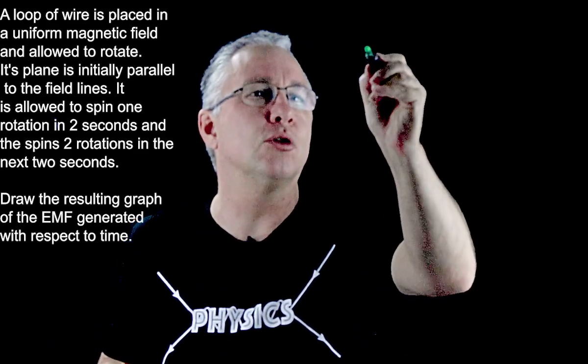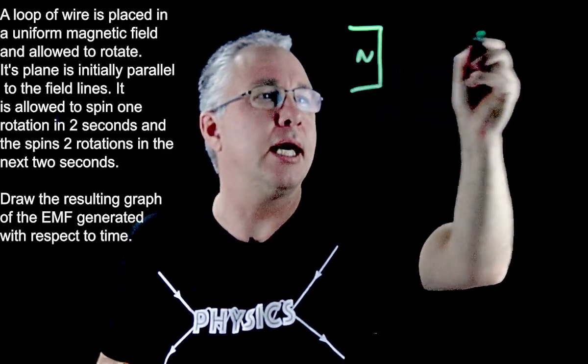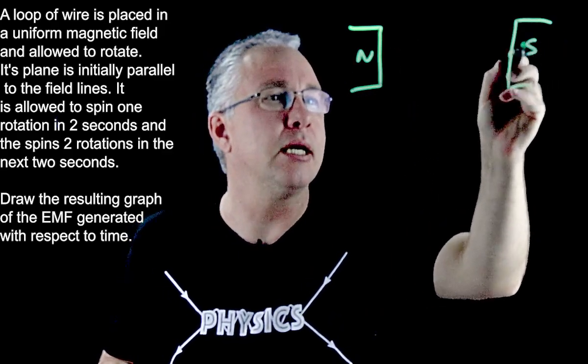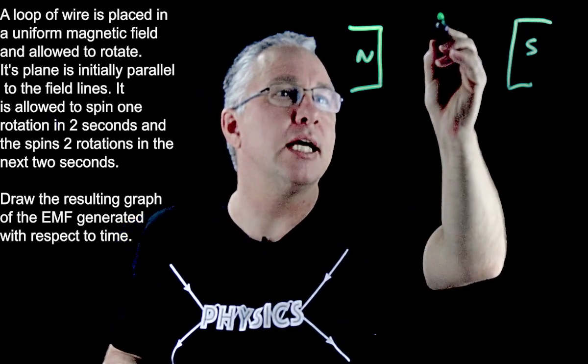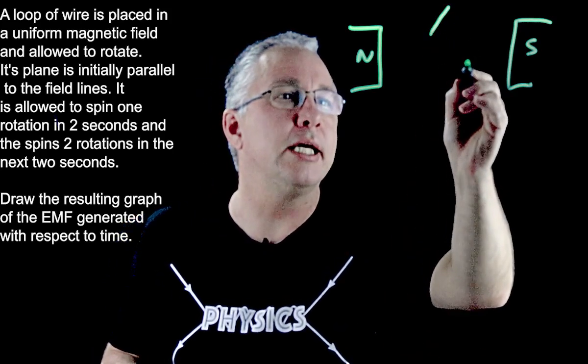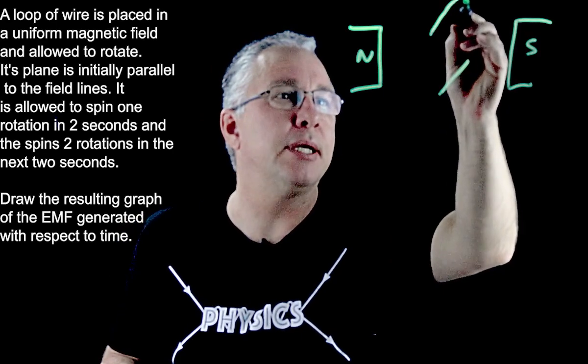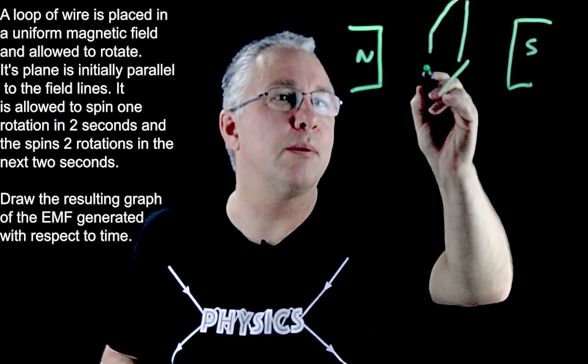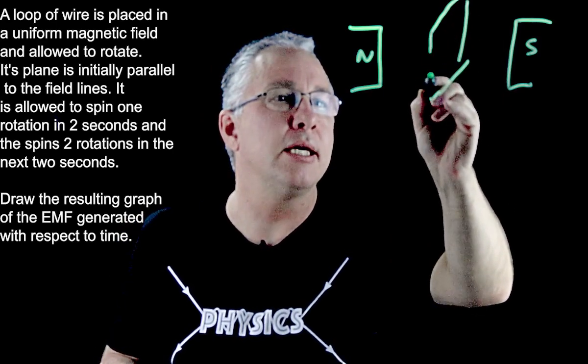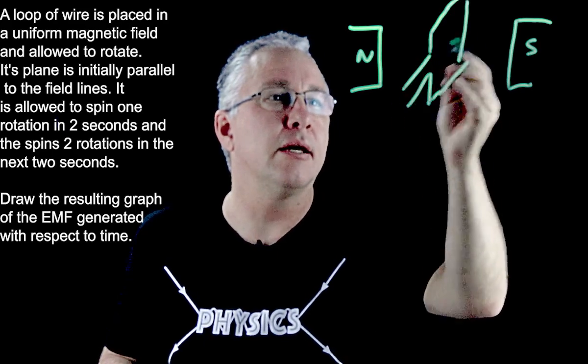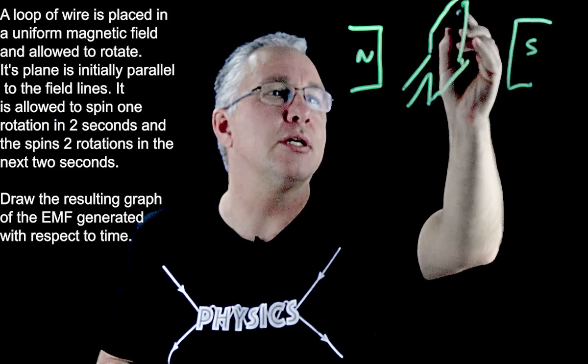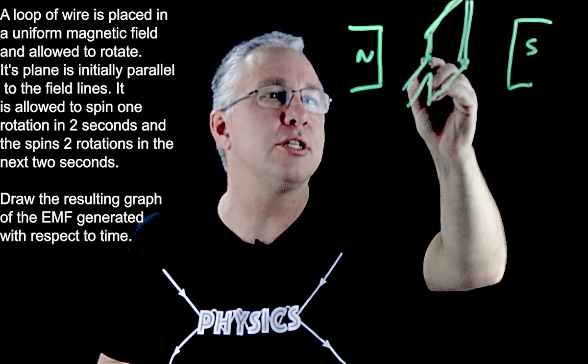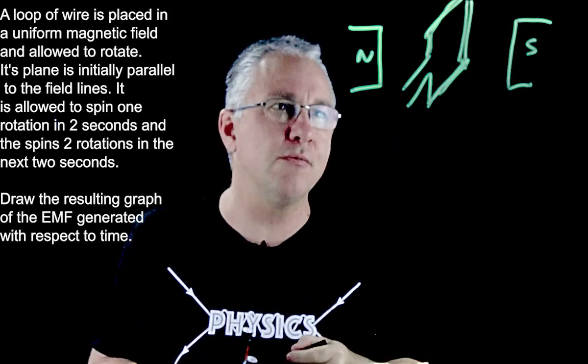So let's quickly draw our situation. We have a north pole here and a south pole here. Our magnetic field lines are moving across and then what I have is a loop of wire that we are told initially is going to be in the direction where the plane of the wire is in the same direction as my magnetic field lines. So this is my drawing. It's not a fantastic drawing but you'll hopefully see what's happening.